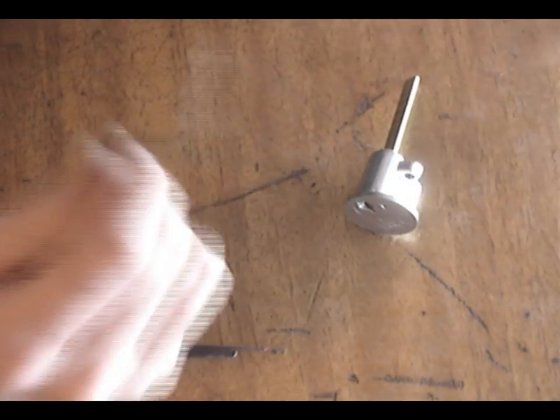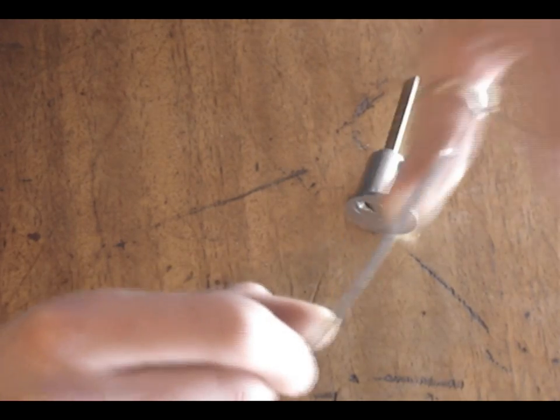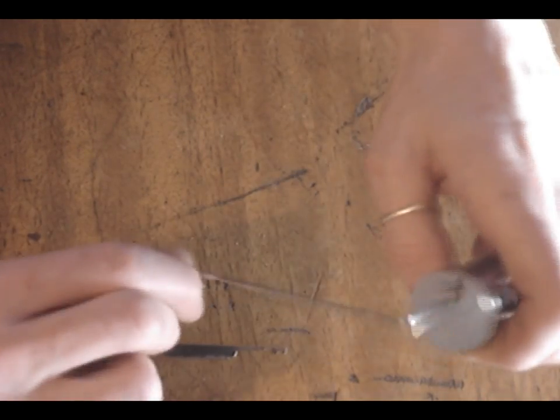Tonight I'll show you how to pick a lock using a torsion bar, which is a small flexible piece of metal that can be inserted into the lock to turn the barrel.